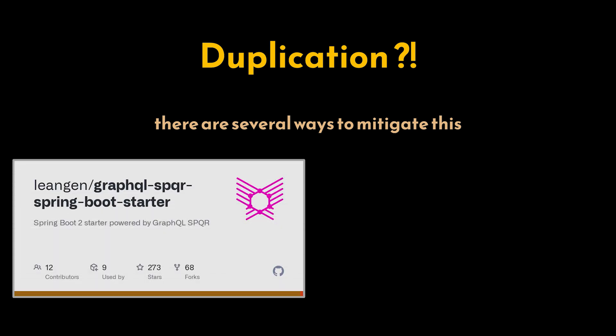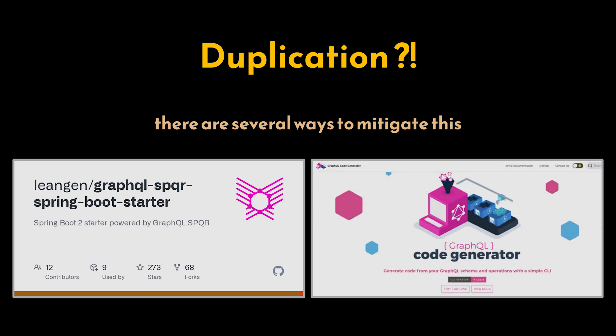We can use libraries like GraphQL SPQR to replace our schema with annotations inside of our Java classes, avoiding the need for separate schema files. Or we can make use of schema generation tools to generate schema files from existing classes or vice versa, reducing manual duplication.